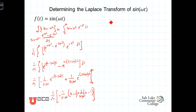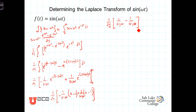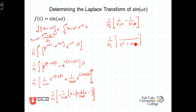Continuing, we have 1 over 2j times: the minus 1 times that minus makes it plus 1 over s minus j omega, and the plus times minus 1 gives minus 1 over s plus j omega. Combining these over the common denominator of s minus j omega times s plus j omega — they're conjugates, so the imaginary parts cancel — we get s squared plus omega squared in the denominator, since j times j is minus 1 and minus times minus gives plus omega squared.